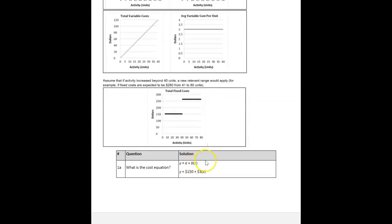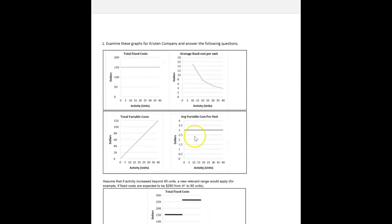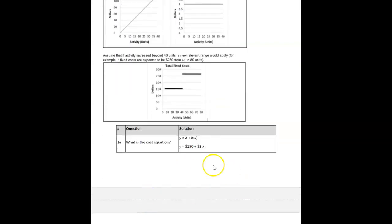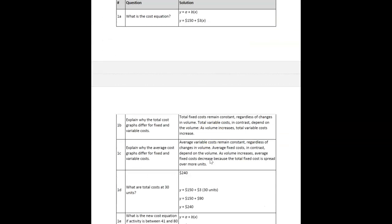Then the questions that go on here, like the first one is, what's the cost equation? For the first one, we've got a fixed cost of 150, so it would be y equals 150 plus 3x. So 150 is your total fixed cost, $3 is your variable cost per unit times the number of units. The equation thing going here makes a lot of sense.